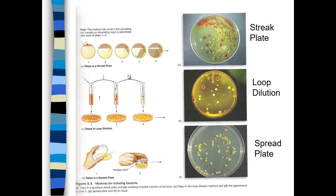Loop dilution is much more difficult. There is a procedure in our lab textbook for it, but we will not do it because loop dilution involves inoculating bacteria into molten media. The molten media is usually hot and can kill a substantial portion of the microbes, so you lose microbes just because of the heat. It's also difficult to maintain sterility in loop dilution. But you go through three steps of dilution, and by the time you get to the third step, you can isolate individual colonies.